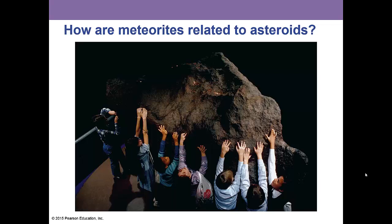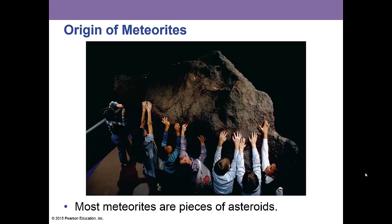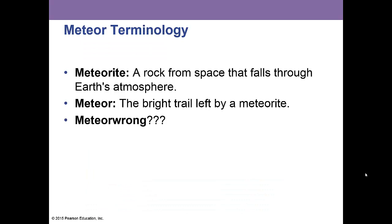How are meteorites related to asteroids? Most meteorites are pieces of asteroids. A meteorite is a rock from space that falls through Earth's atmosphere. A meteor is the bright trail left by a meteorite. And what's a meteoroid? Well, that's just a rock on the ground.